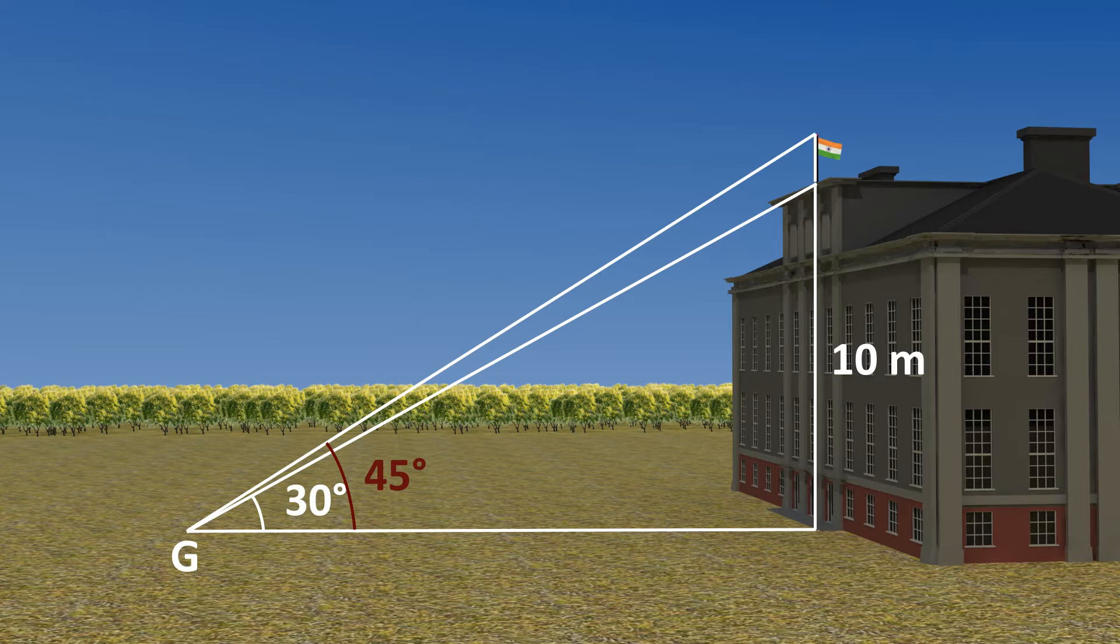Let us find the length of the flag staff and the distance of the building from the point G. You may take square root 3 which is equal to 1.732.